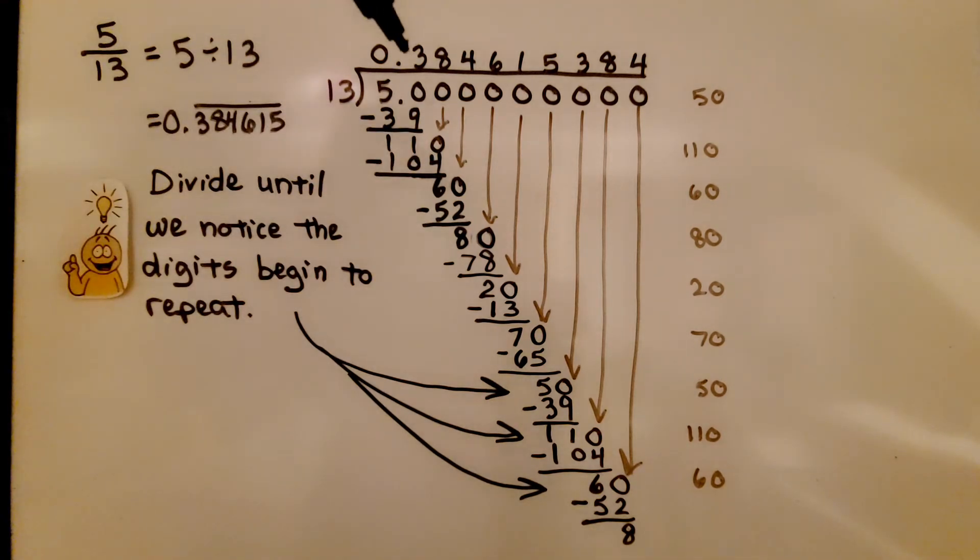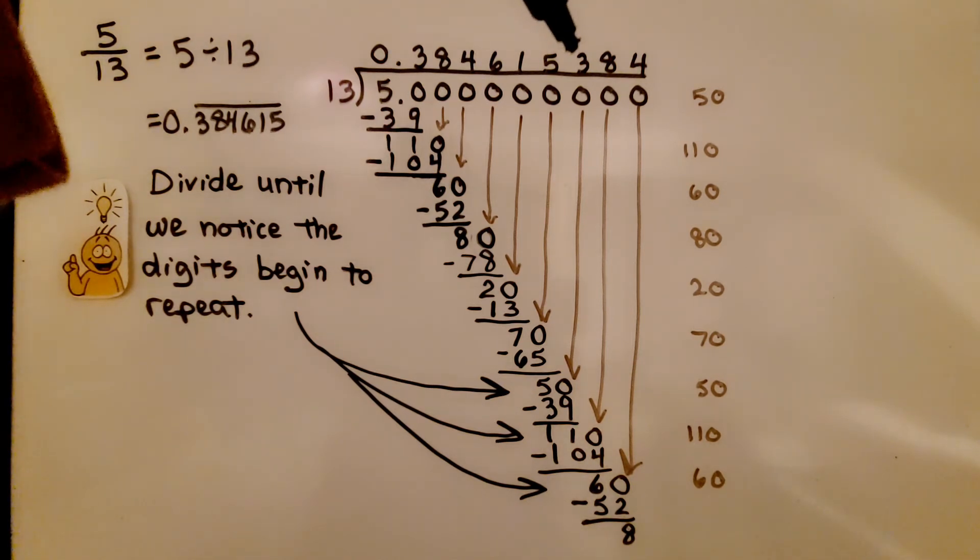And look at the quotient. We have 0.384615, and then it goes 384 again. So it's going to start repeating. We divide until we notice the digits begin to repeat, or if we get a zero remainder.